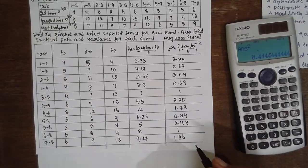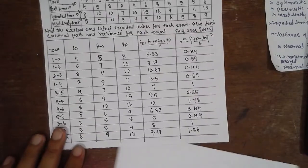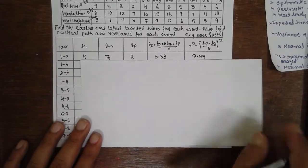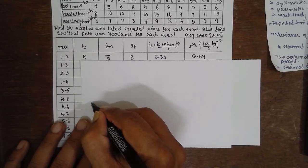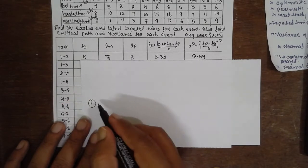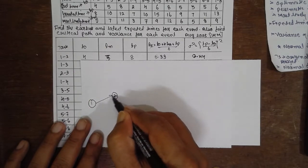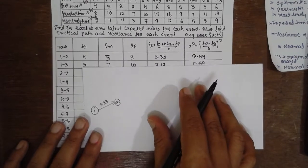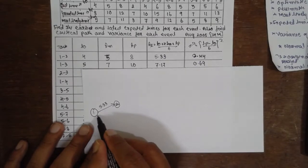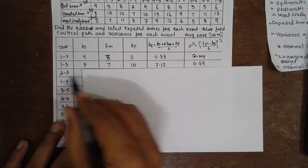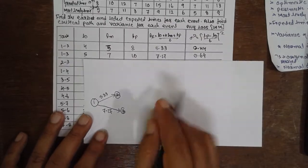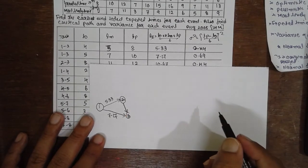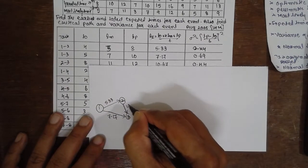After completing this, go for the network diagram. Draw the network diagram: node 1 connected to 2 with Te value 5.33; node 1 connected to 3 with value 7.17; node 2 connected to 3 with value 10.67.